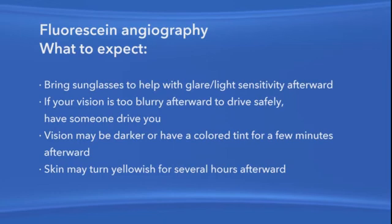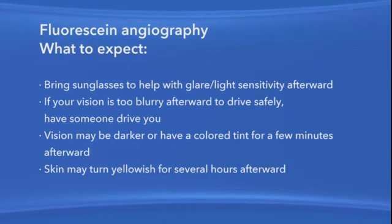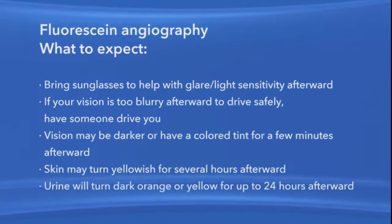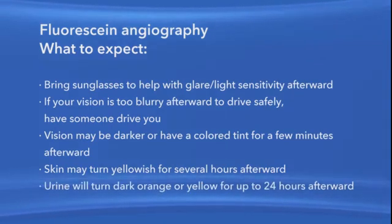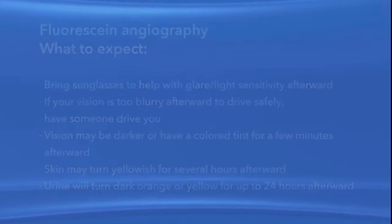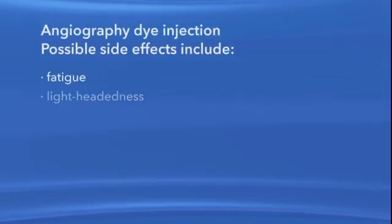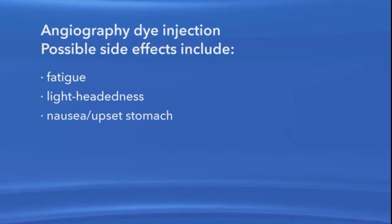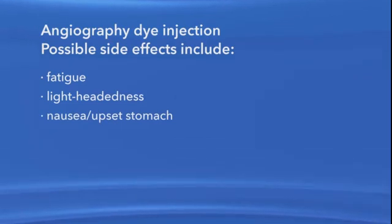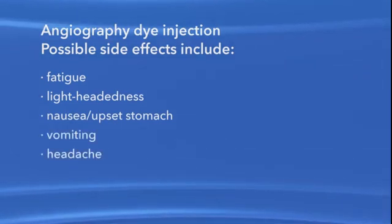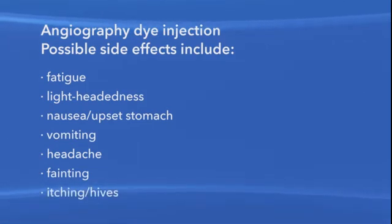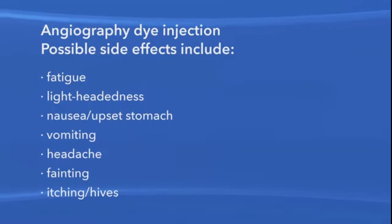Also, because your kidneys remove the dye from your body, your urine will turn dark orange or yellow for up to 24 hours following the test. Some people may feel tired, light-headed, or nauseous after having the dye injected. Also possible are vomiting, headache, fainting, itching, or hives. Alert your ophthalmologist if you experience any of these side effects.